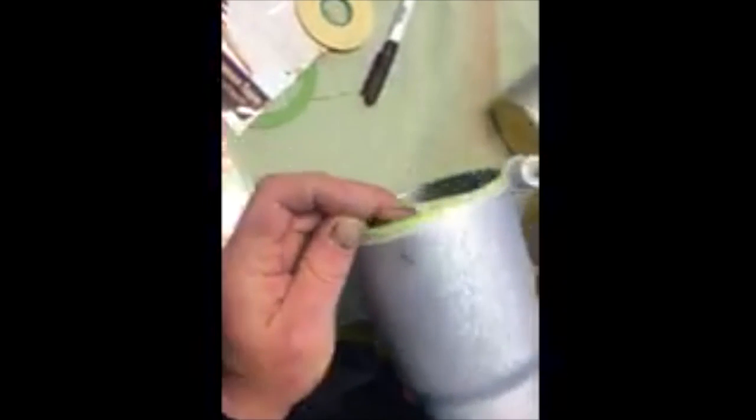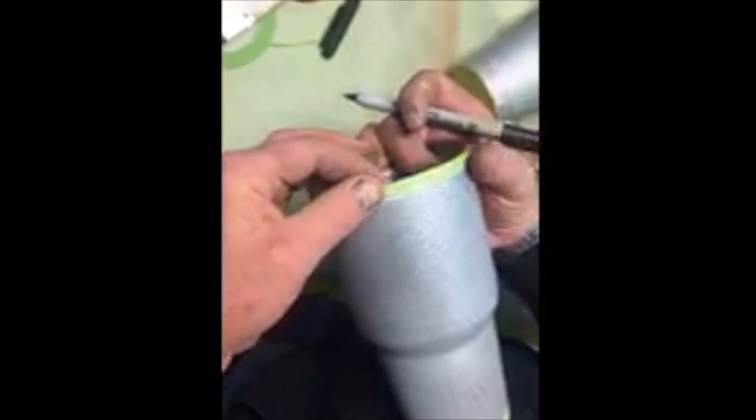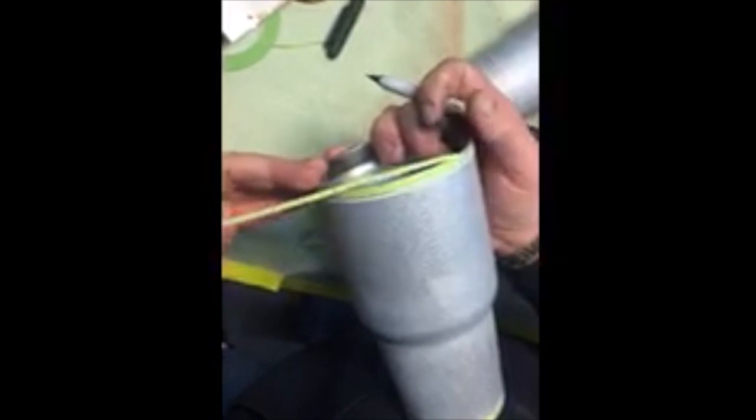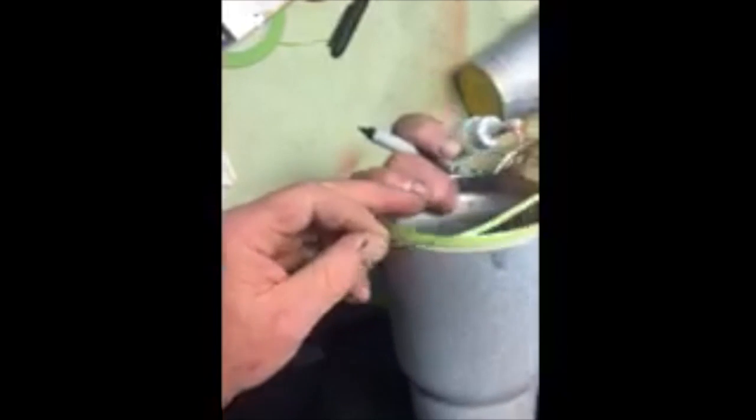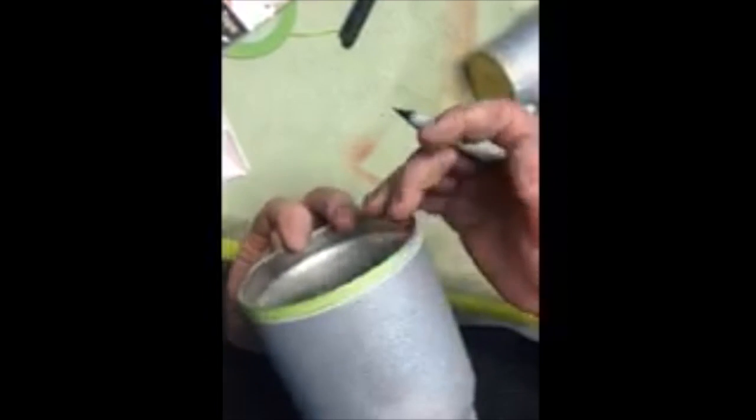Then you take your tape, roll it around to the exact halfway mark where you roll it, all the way around till your first mark lines up there where you started.